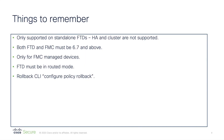A few things to remember: this feature is only supported in standalone FTDs — HA and cluster are not supported. The minimum version for FMC and FTD is 6.7. This is only supported for FMC-managed devices. FTD must be in routed mode and not in transparent mode. The rollback CLI is supposed to be used only for this feature in order to restore connectivity failures caused by incorrect configuration deployment from the FMC.